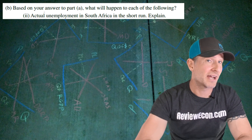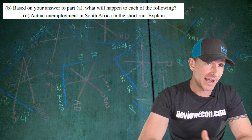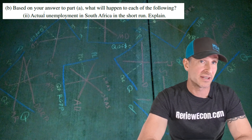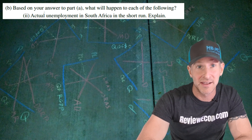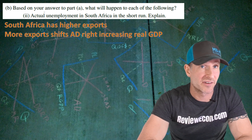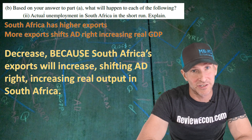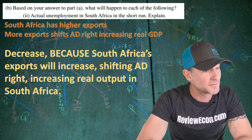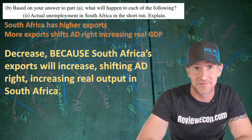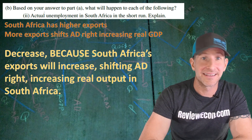For part B double I, we have to say what would happen to the actual unemployment rate in South Africa in the short run and explain. We just said that imports into the United States from South Africa are going to increase. For South Africa, that means they are having an increase in exports, and more exports are going to shift South Africa's aggregate demand, increasing their real GDP output. The answer is decrease, because South Africa's exports will increase, shifting aggregate demand to the right, increasing real output in South Africa. Real GDP output and unemployment are inversely related. And if you've answered something like that, you get your next point.